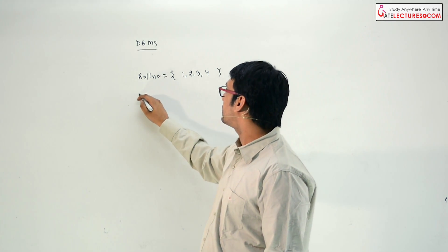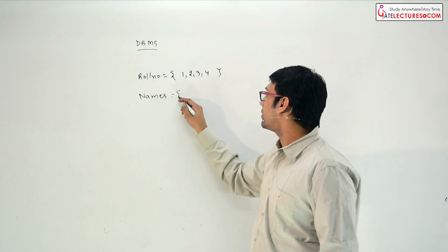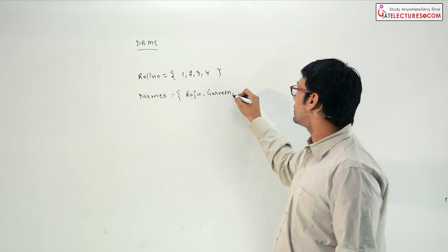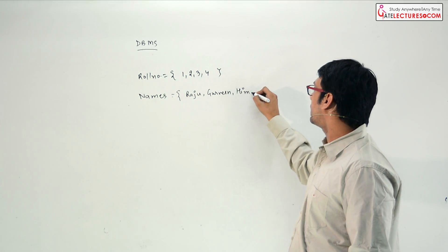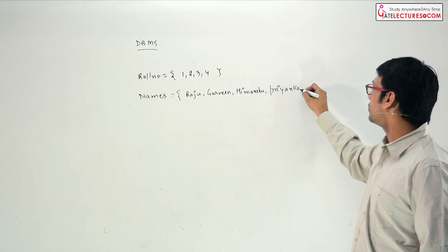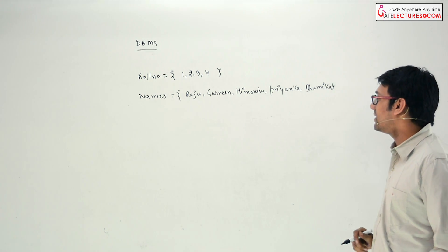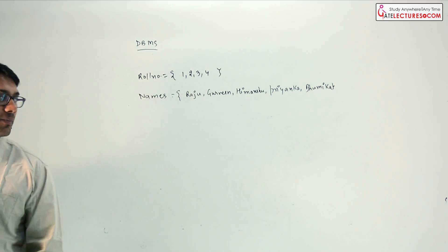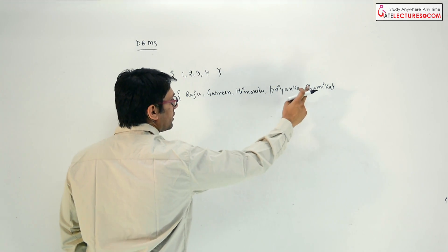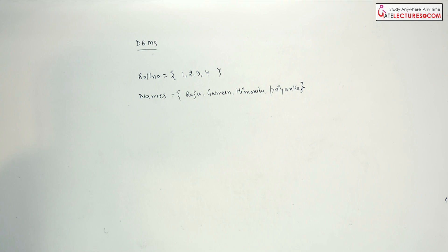And there is a set which is the set of names. The set of names may have the names: Raju, Gurveen, Himanshu, Priyanka, and Bhumika. So we have these names — let us assume there are 4 or 5 elements for simplicity purposes.